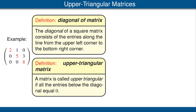A matrix is called upper triangular if all the entries below the diagonal equal 0. Thus, the matrix shown in this example is an upper triangular matrix. Notice some of the other entries can be 0. In this case, we have the entry in row 1, column 3 — in other words, the entry in the upper right-hand corner — that entry is 0, but that's not a requirement. The requirement is that all the entries below the diagonal be 0. In this case, of the 3-by-3 matrix, there are three entries below the diagonal. All three are 0. Thus, this is an upper triangular matrix.